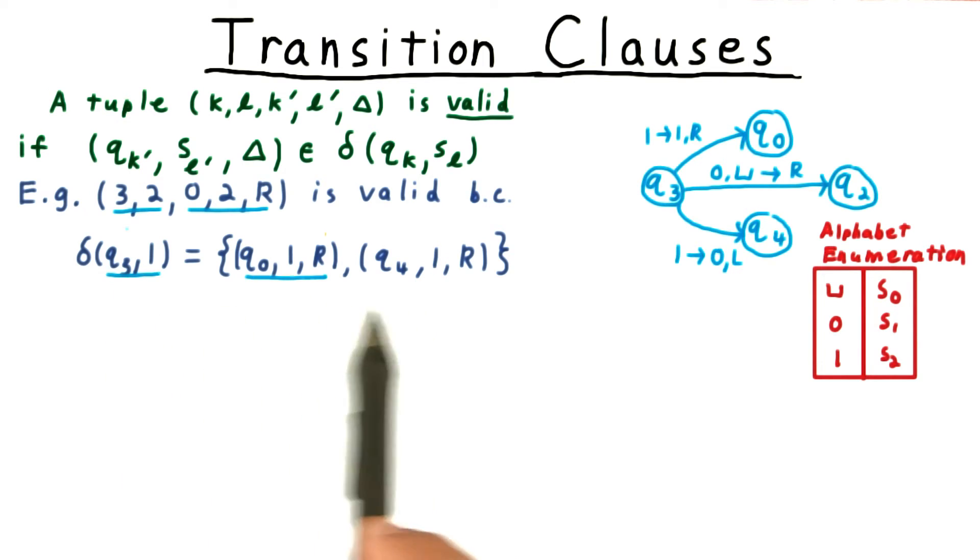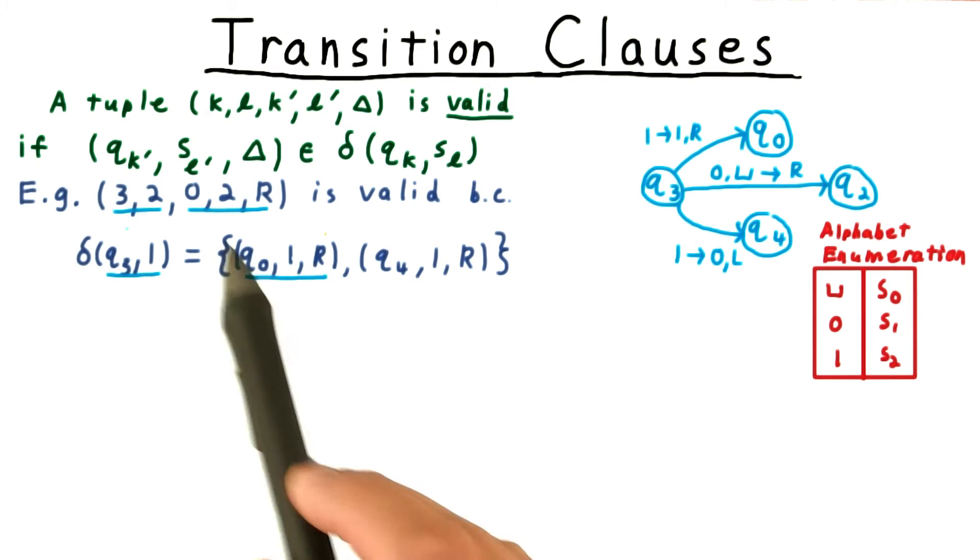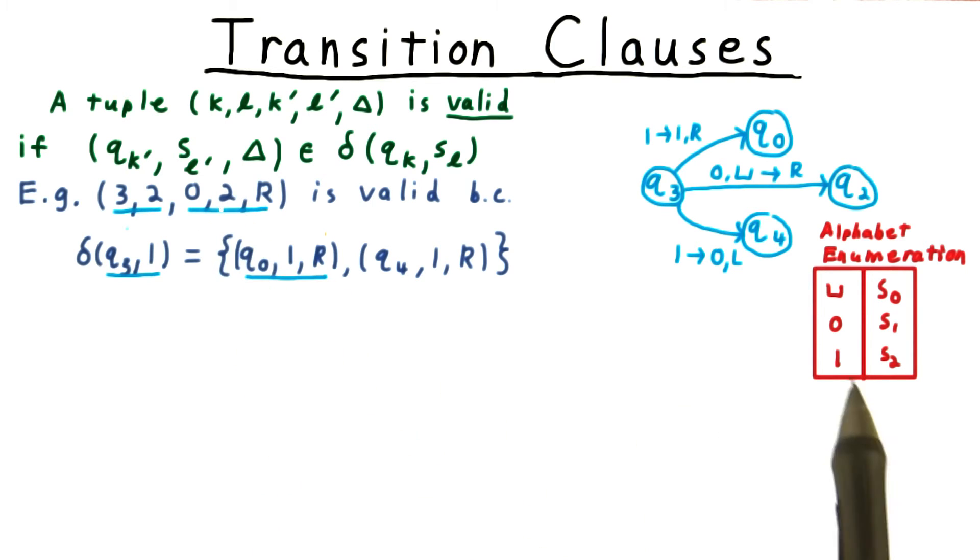The last three numbers indicate the transition being made. In this case, it is in the set defined by delta. We're moving to state q0, we're writing symbol 2, which is a 1, and we're moving to the right.